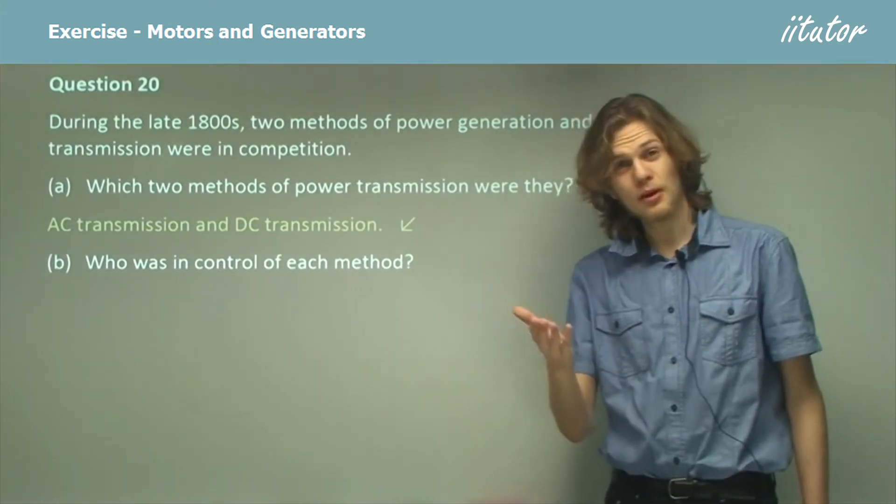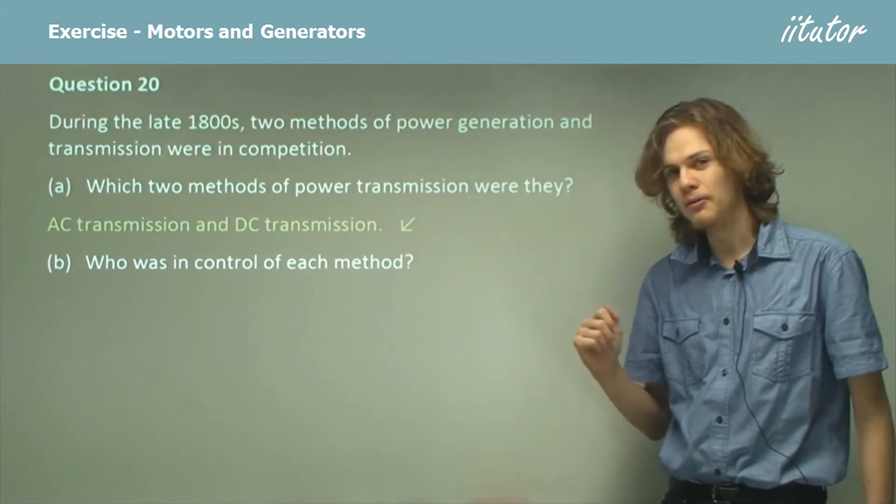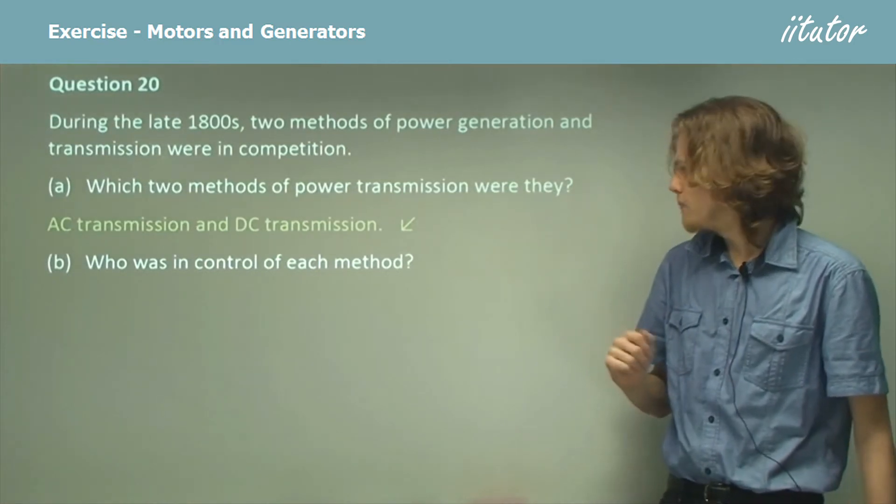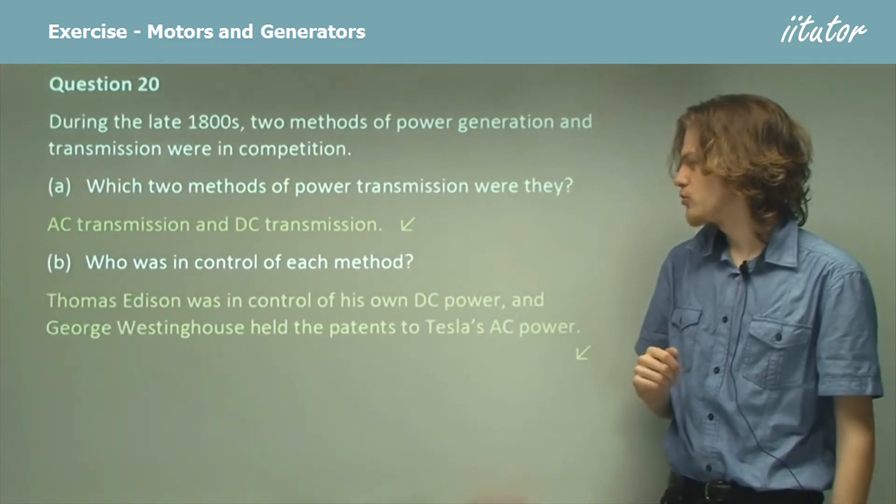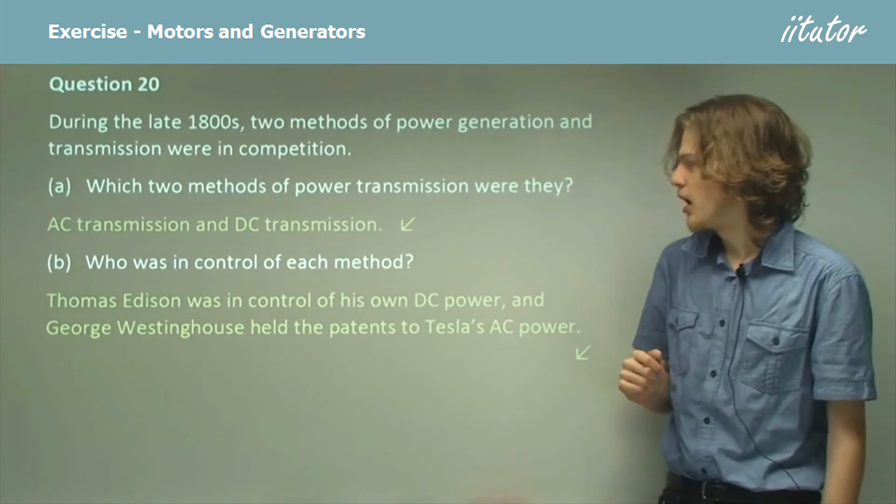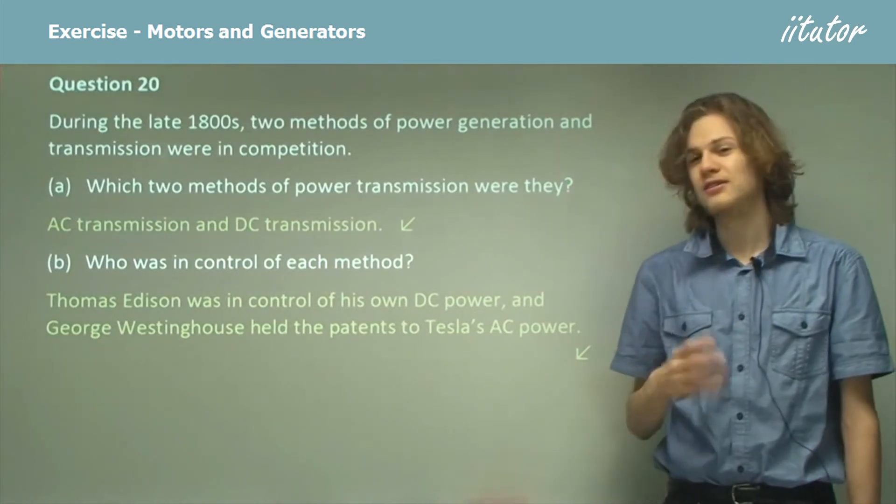So if we think back to the history that we've learned about AC and DC power, we know that Thomas Edison was in control of his own DC power, and George Westinghouse held the patents to Tesla's AC power.